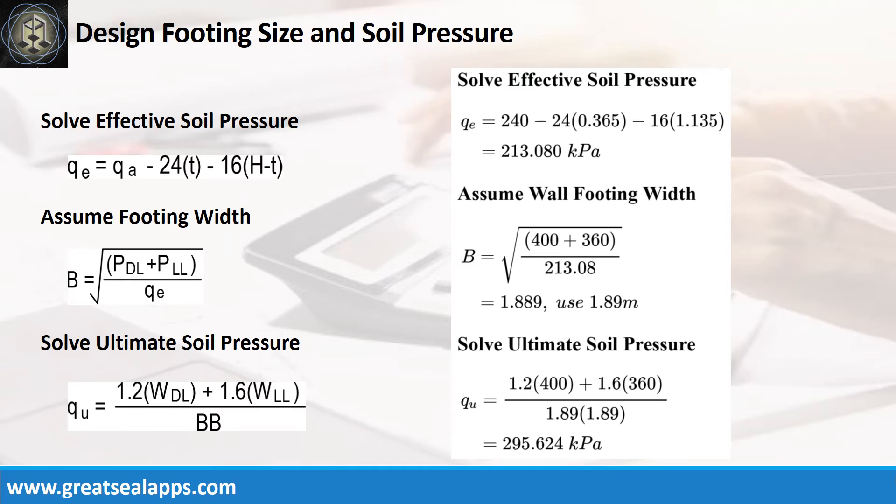Given allowable soil pressure equals 240 kPa, depth from natural grade line equals 1,500 mm, and assumed footing depth equals 365 mm, the effective soil pressure is 213.08 kPa.